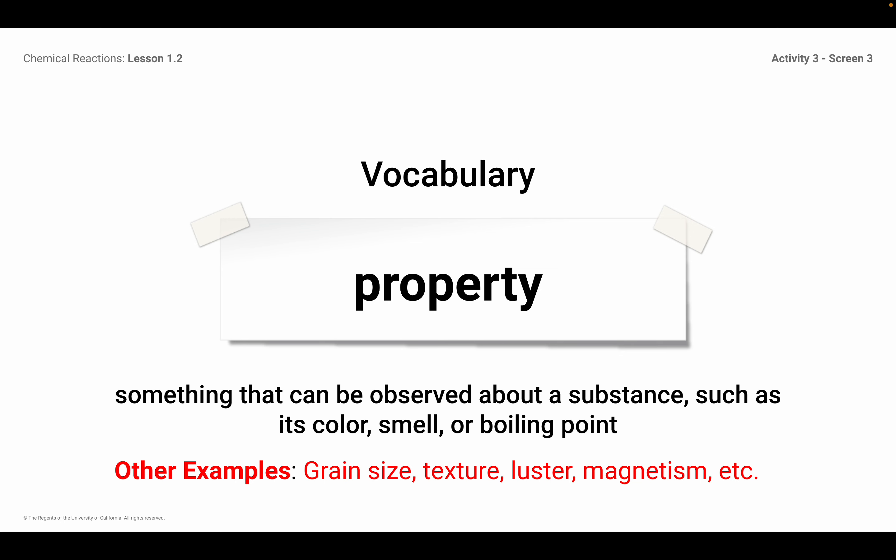I wrote down some other examples because they're ones that we're talking about in class when we're looking at what's inside the vials on our trays. You'll need to be aware of grain size, texture, luster, and magnetism — so whether or not something's magnetic.